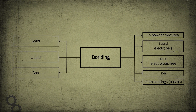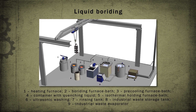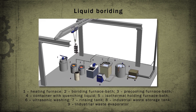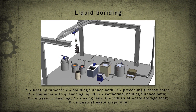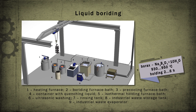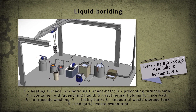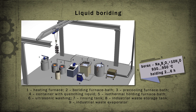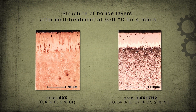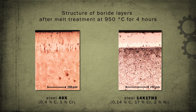Electrolysis buridine is performed during the electrolysis of molten borax. The product serves as a cathode. Boron saturation temperature is 930–950 centigrade degrees, holding time 2–6 hours. The thickness of the boronized layer is 0.1–0.2 millimeters.